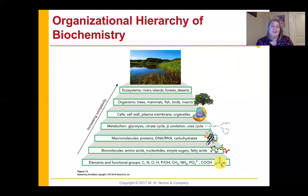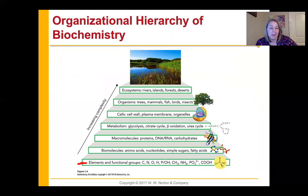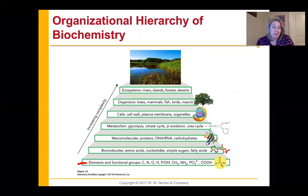When we look at the big overall organization of biochemistry, we're going to start with elements and functional groups at the bottom and build up. If we have these elements and functional groups, we can combine them to make our big four biomolecules: amino acids, nucleotides, sugars, and fatty acids. Then we use those biomolecules to make bigger things — macromolecules — like proteins, DNA, RNA, and complex carbs.